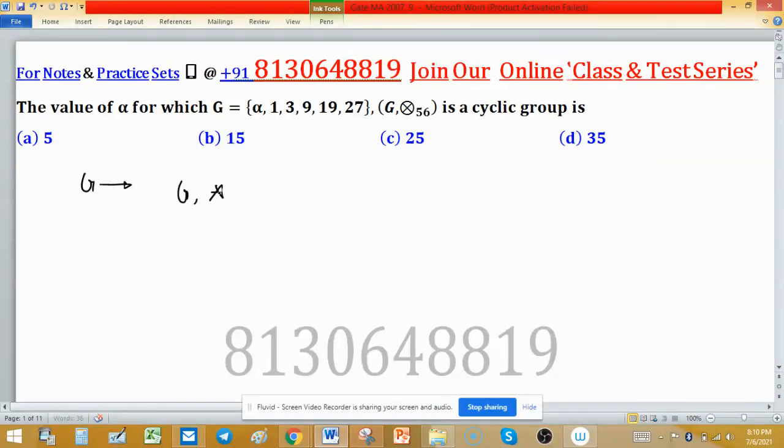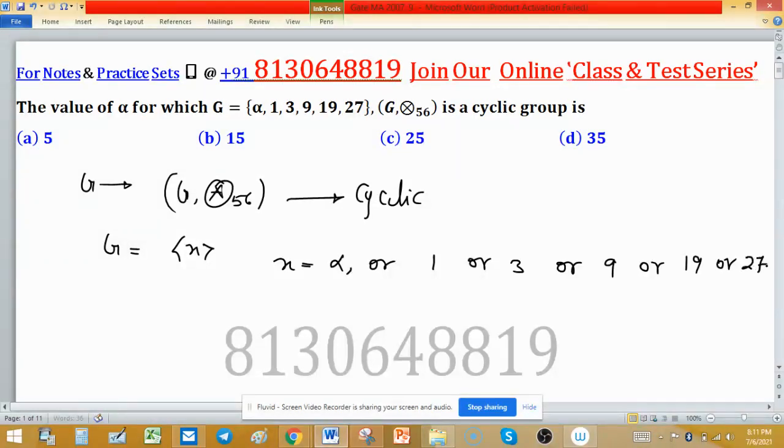Since it's cyclic, it will be generated by an element. Suppose G is generated by x. So x may be either α, 1, 3, 9, 19, or 27. As you can see, the elements 1, 3, 9, 27 are powers of 3.